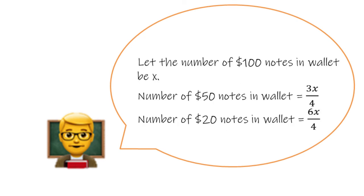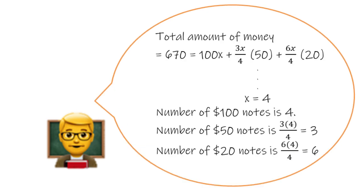Let the number of $100 notes in the wallet be 4x. The number of $50 notes in the wallet is therefore 3x. And the number of $20 notes in the wallet is then 6x. The total amount of money $670 is equal to 4x multiplied by $100 plus 3x multiplied by $50 plus 6x multiplied by $20. By solving the equation, we get x equals to 1. And therefore, there are 4 $100 banknotes, 3 $50 banknotes, and 6 $20 banknotes in the wallet.